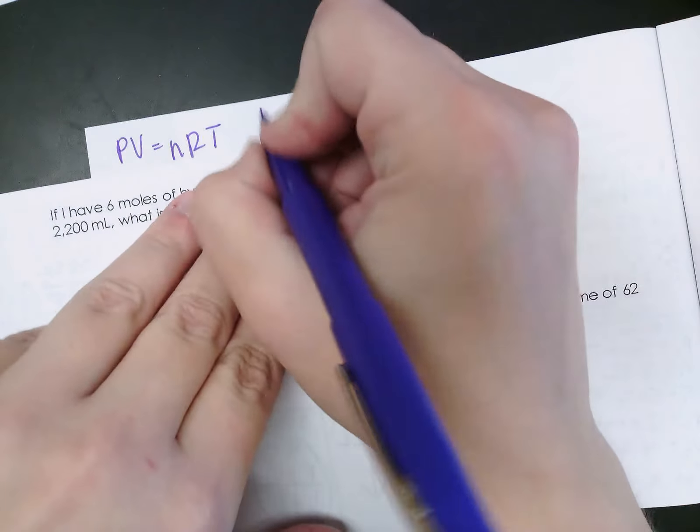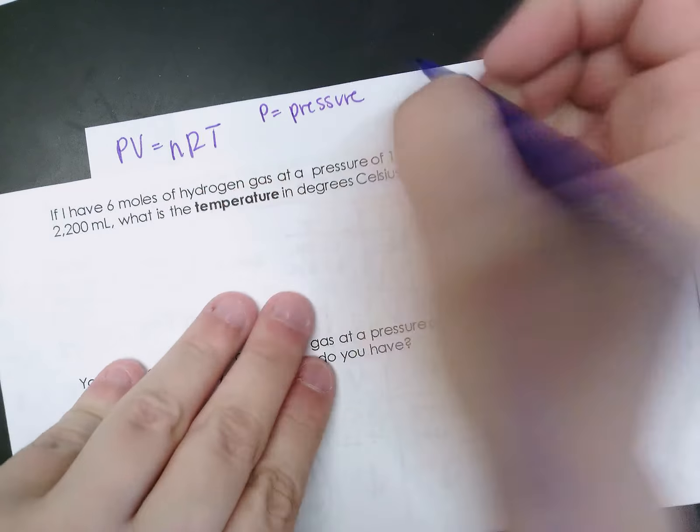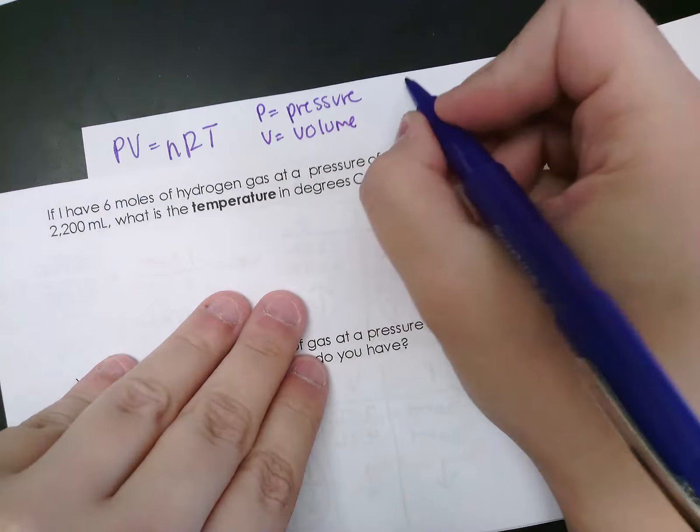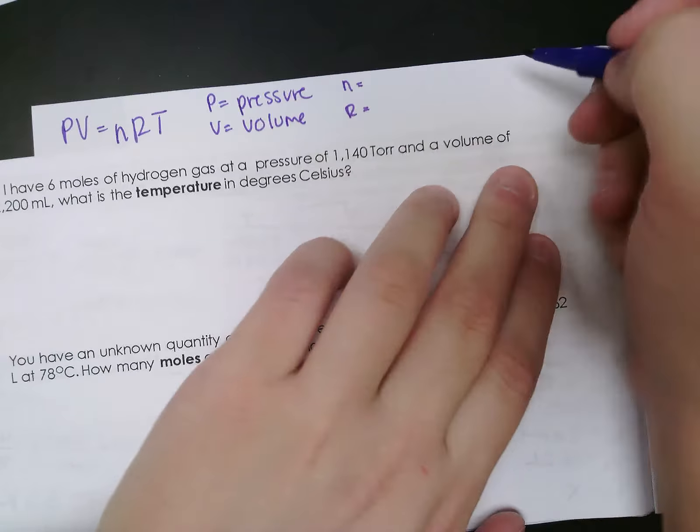So P, just like with our other gas laws, is pressure. V is volume. We'll look at n and r in just a second, and T is our temperature.